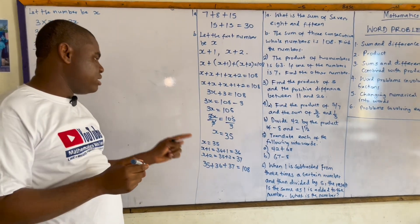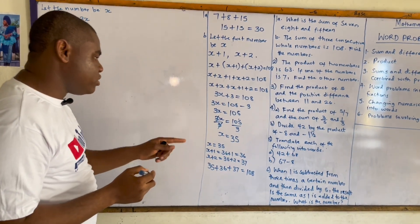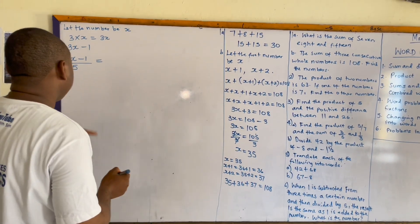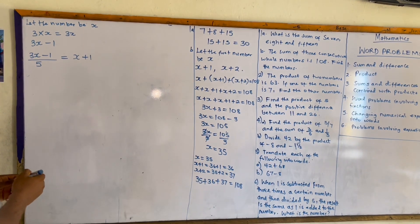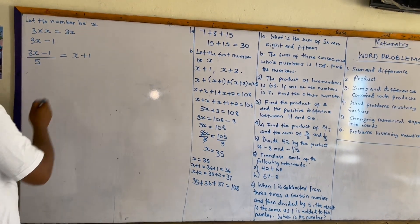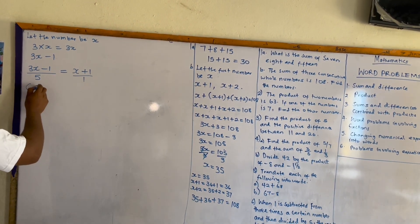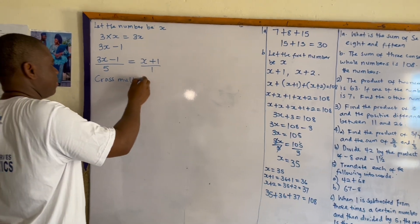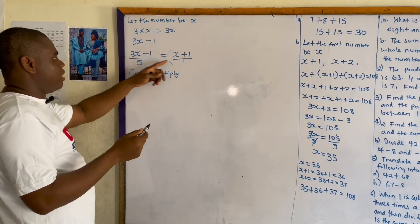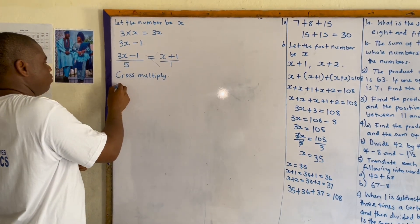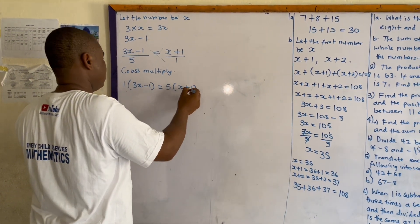The result is the same as one added to the number, which is x plus one, written as (x plus one) over one. We can now cross-multiply: one times (3x minus one) equals five times (x plus one), giving us 3x minus one equals 5x plus five.